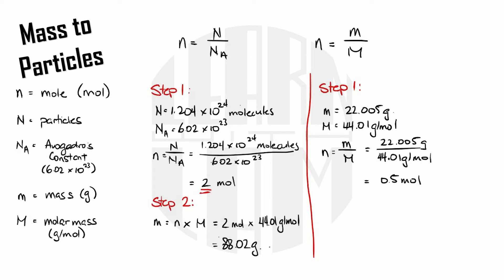Again I'm not really looking for moles, I need molecules which are particles so the equation that I need is big N equals little n times NA which is 0.5 moles from above times 6.02 times 10 to the 23 and that gives me 3.01 times 10 to the 23 molecules of carbon dioxide.